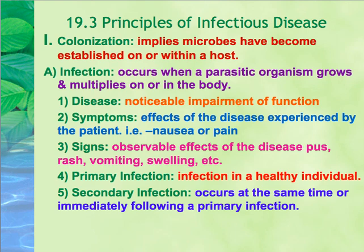There's also a difference between a primary infection and a secondary infection. A primary infection occurs in a normal, healthy individual, and the pathogen that causes it is considered a primary pathogen. A secondary infection occurs at the same time as, or immediately following, a primary infection — it's almost opportunistic. The pathogen that causes a secondary infection is therefore called an opportunistic pathogen.